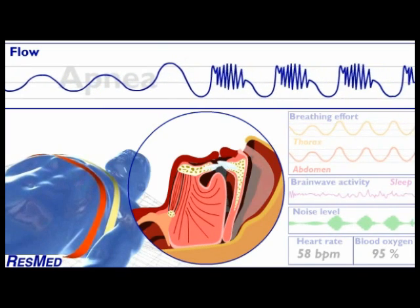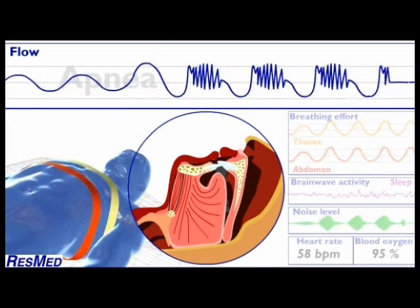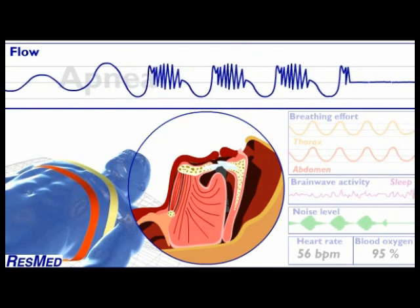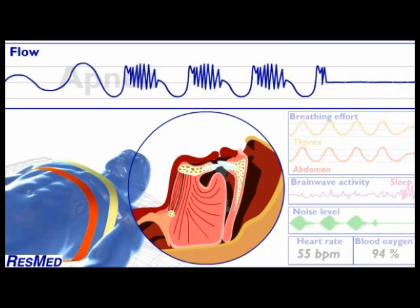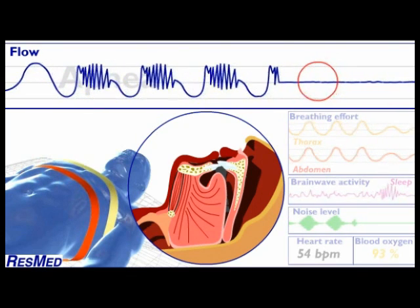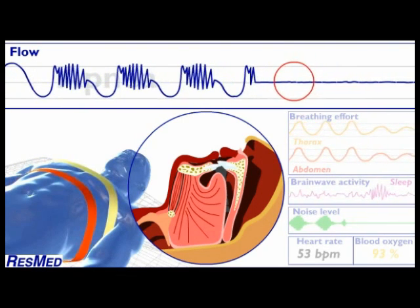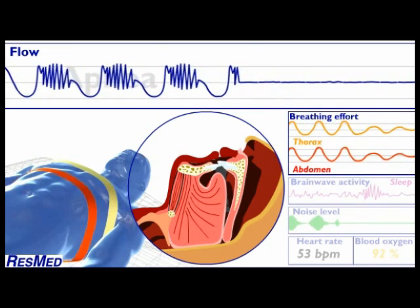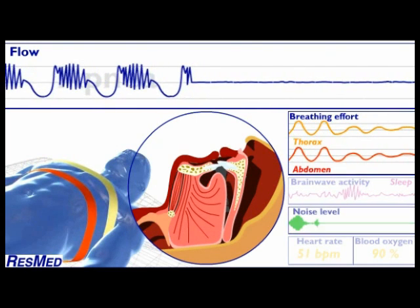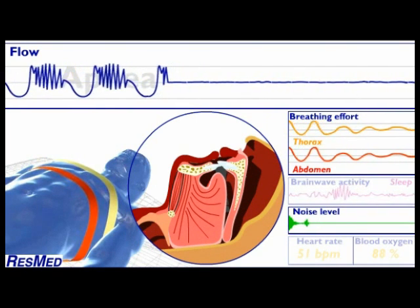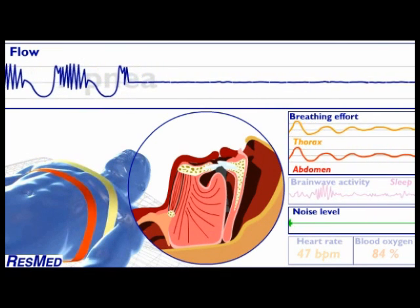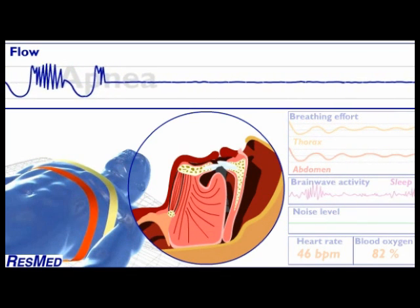There are times when airflow stops completely because the airway is blocked — this is known as an apnea. Our model shows obvious signs of an apnea event: the airflow trace changes to a horizontal line for the length of time the apnea persists, demonstrating absolutely no airflow. As our model struggles to get air through the collapsed airway, there is no noise at all — a particularly dramatic change if the apnea follows snoring.